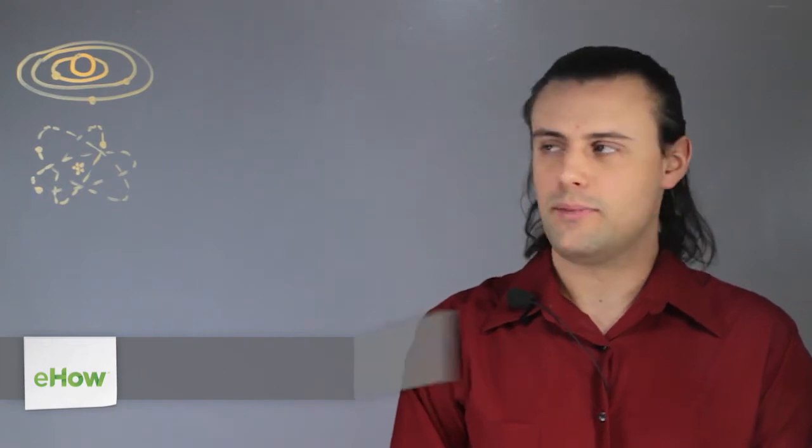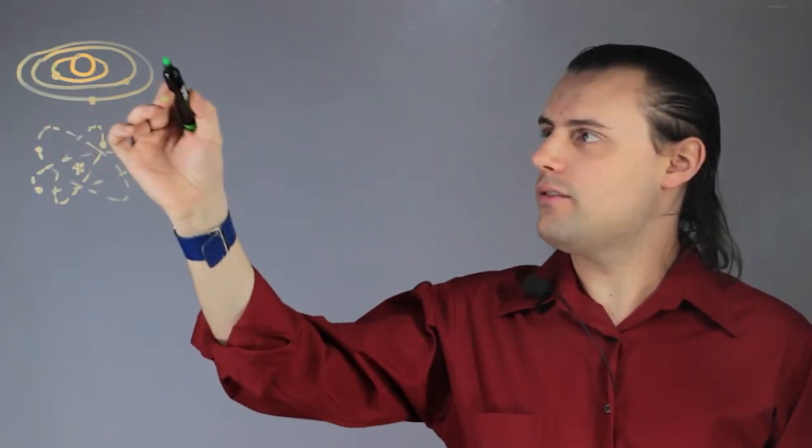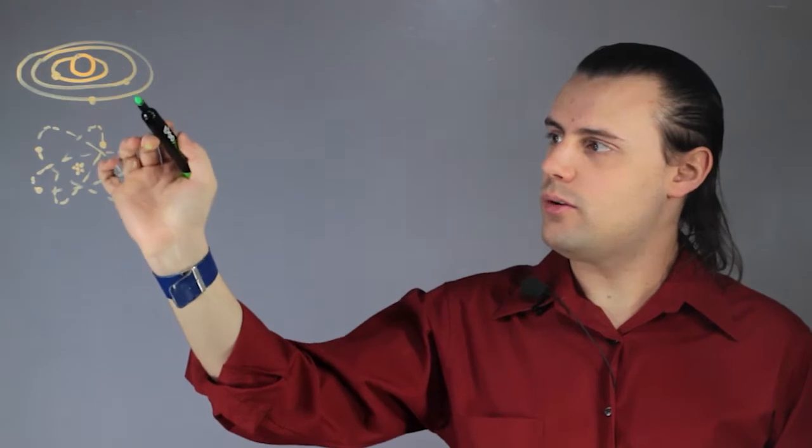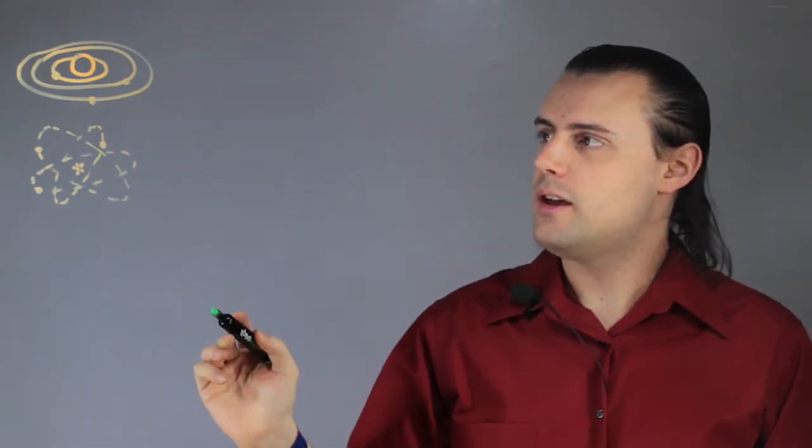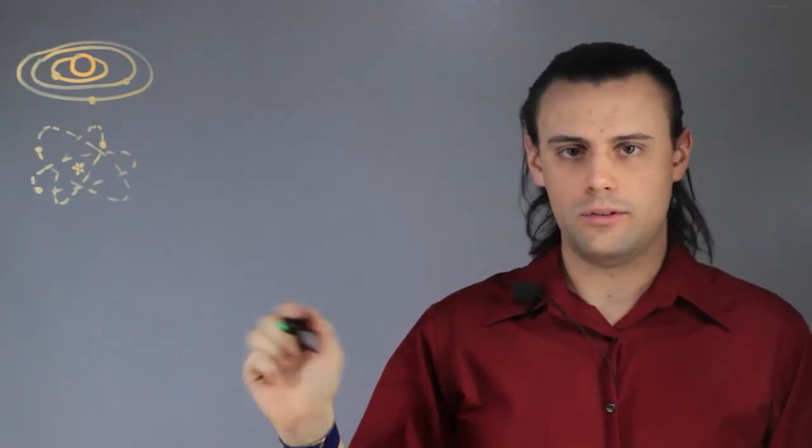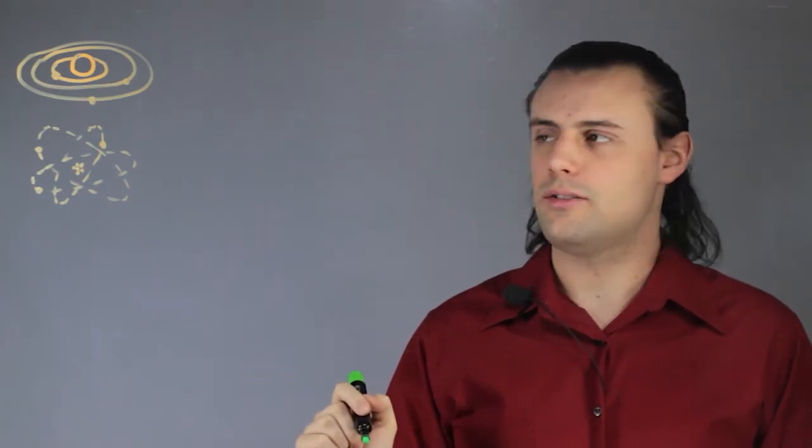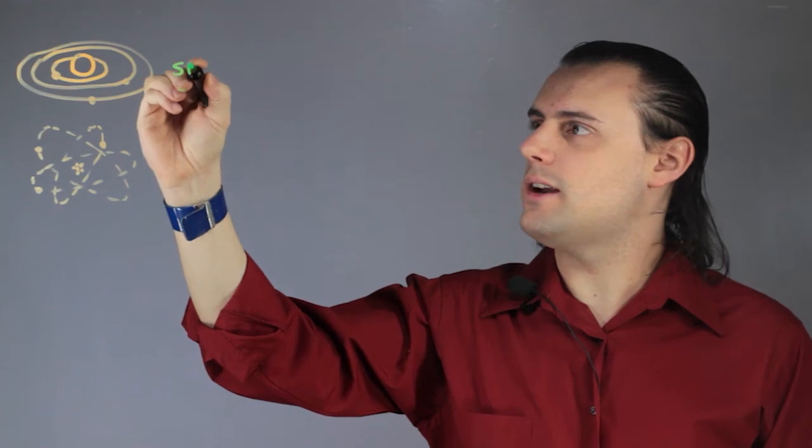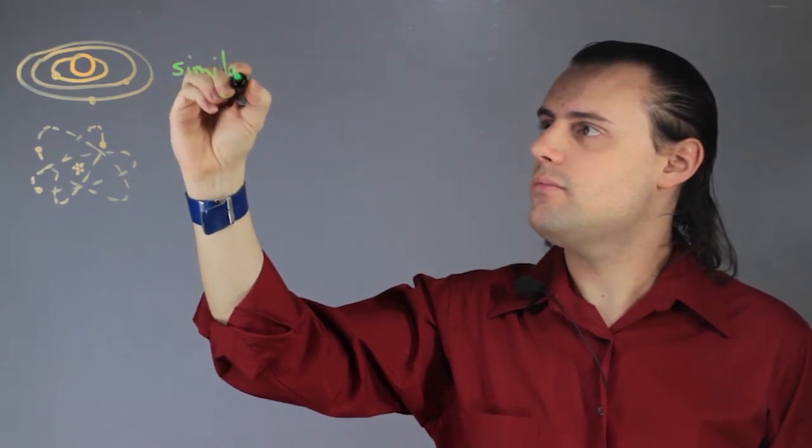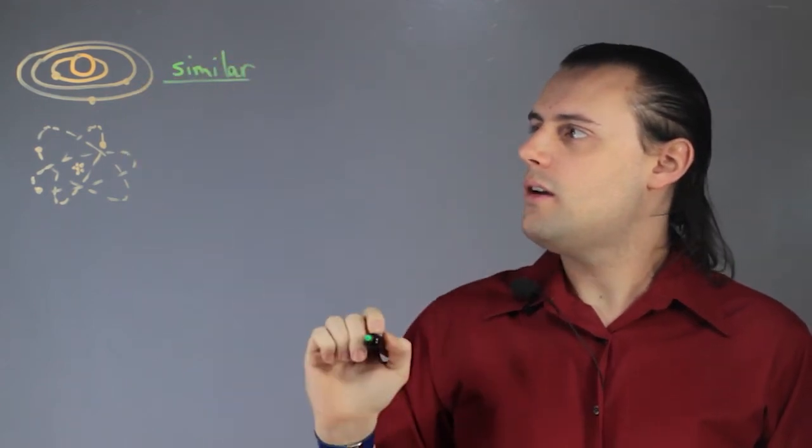Hello my name is Walter Unglaub and this is how is an atom similar to and different from the solar system. So here I have two diagrams, one of a solar system and one of an atom. While there are some similarities, there are certainly more differences than there are similarities. So first let's look at the similarities.